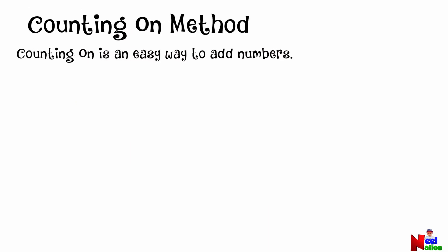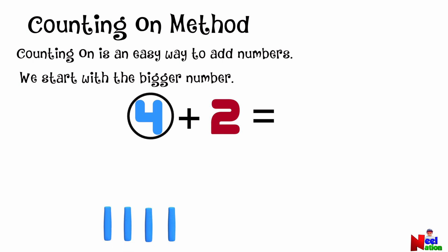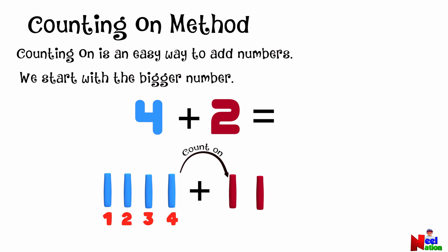Counting on is an easy way to add numbers. In this method, we usually start with the bigger number. For example, let's add four plus two. In four and two, which is the bigger number? Four. Keeping the bigger number four in mind, we count on starting after four two more times. That is five and six. So four plus two equals six. Counting on is an easy method to do addition, as we don't have to count starting all the way from the beginning.